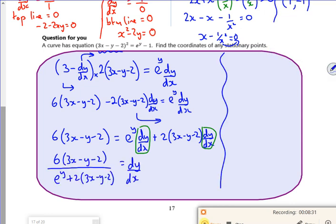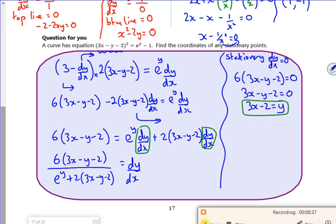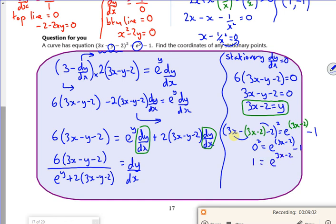Set the top line equal to zero. And then do some rearranging. Got the equation. So now I want to sub the y into there, which is quite messy. Sneakily now, the 3x cancels with the 3x and the 2 cancels with the 2. I get 0 squared. It's e to the 3x minus 2 minus 1, so 1 equals e to the 3x minus 2. Take logs. Log of 1 is 3x minus 2. The log of 1 is 0. Take the 2 over, divide by the 3, gives me an x value of 2/3.